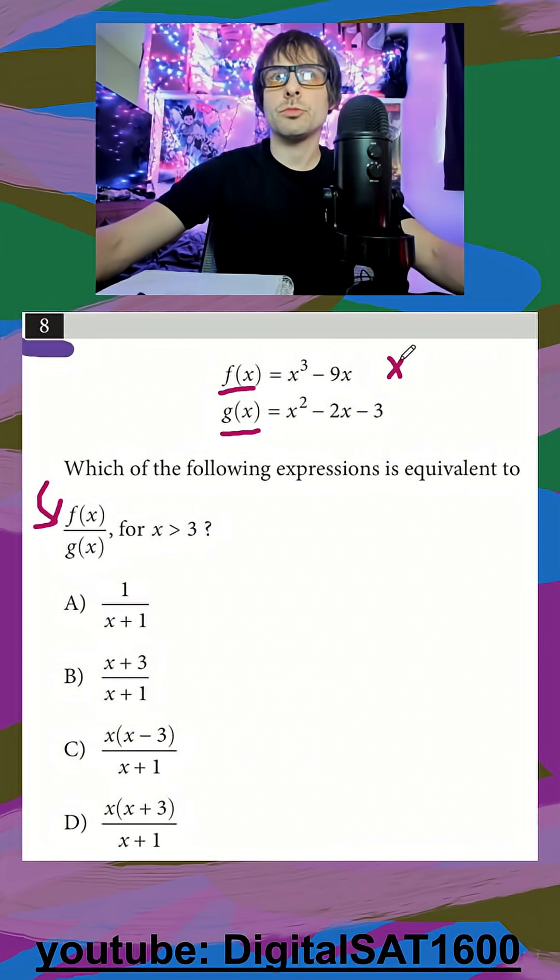So up top, we can factor an x out, and I get x squared minus nine. If you remember your difference of squares or sum and difference, I can factor that x squared minus nine into x plus three, and x minus three.